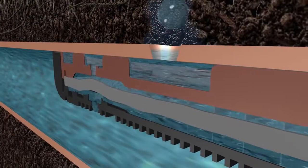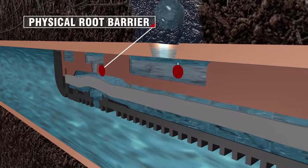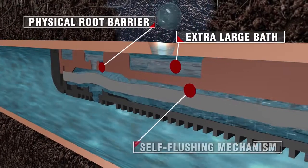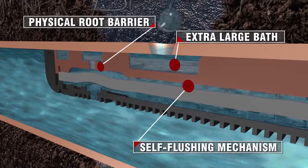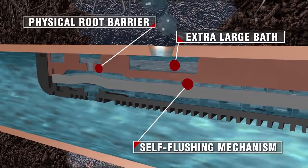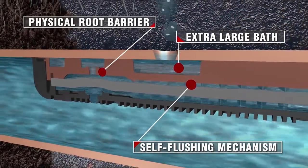In addition, the emitter's physical root barrier, extra-large bath area, and continuous self-flushing mechanism prevent fine feeder roots and sediment from inhibiting water flow within the drip line.